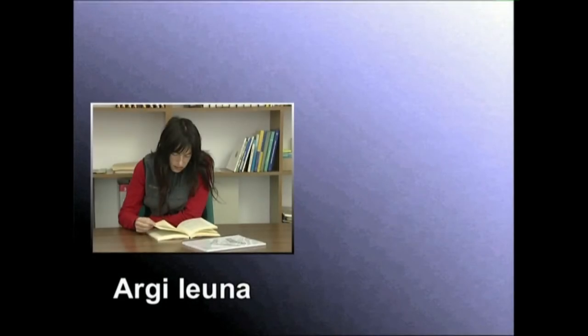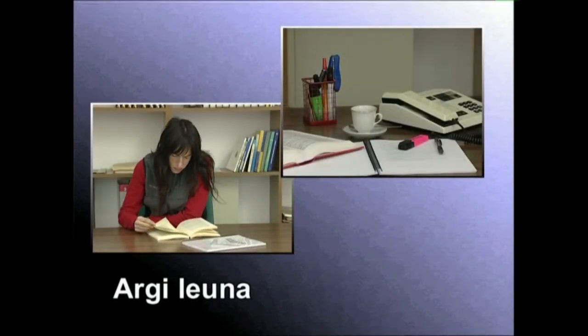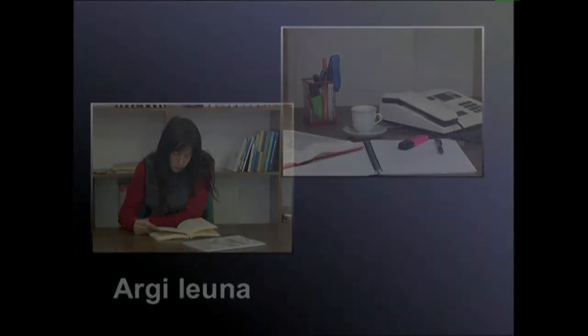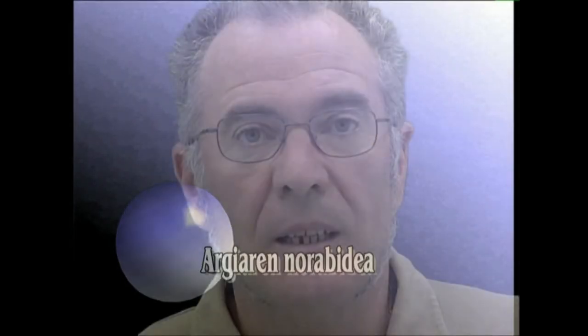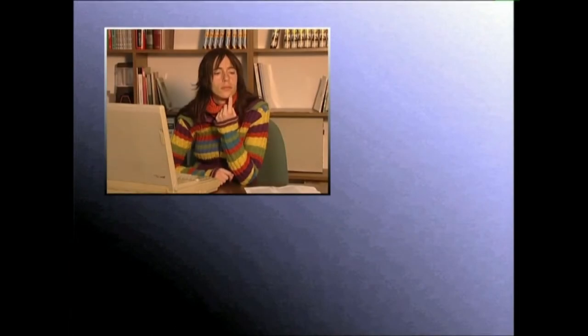Itzalik apena seratzen duen argia da argileuna, dekoratu guztia berdintxu argiztatzen du. Argiaren norabideak objektuen irudian eta itxuran eragin zuzena izaten du; ikus ditzagun adibide argi garri batzuk. Aurrez aurre argiztatutako objektuak eta pertsonaiak lau ikusten dira, volumenik gabe.